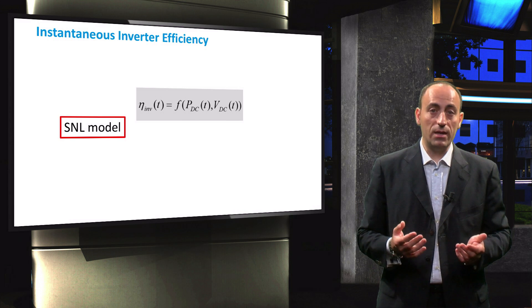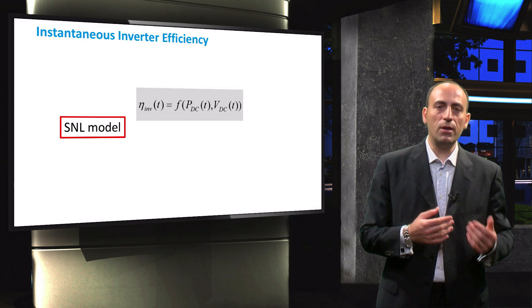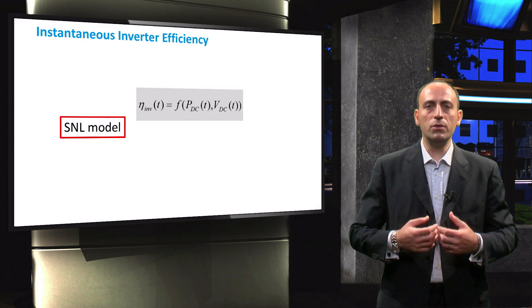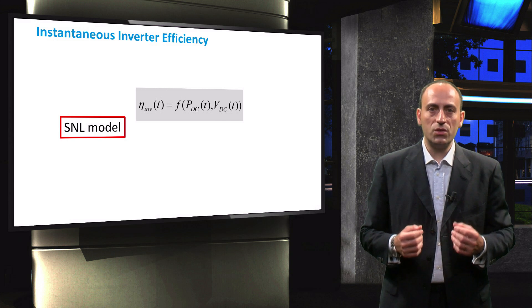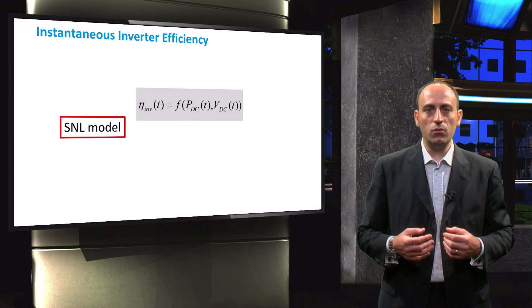Having picked an inverter, determined the number of series connected modules in a string and the number of strings connected in parallel, we now want to know the efficiency of the inverter. We start by finding the instantaneous efficiency of the inverter.